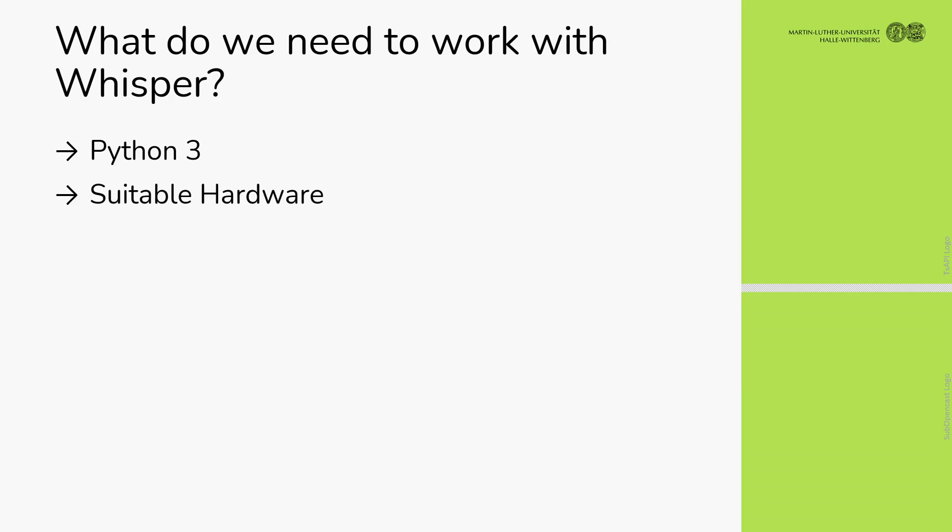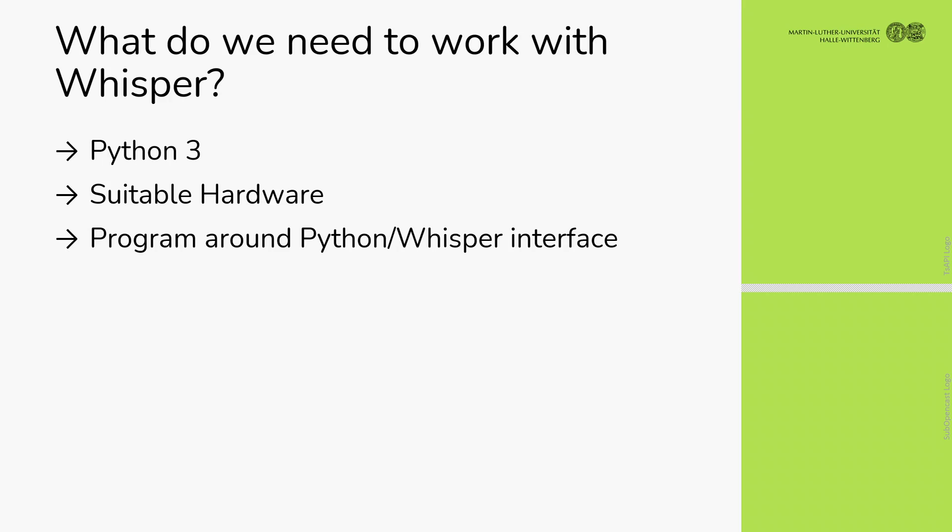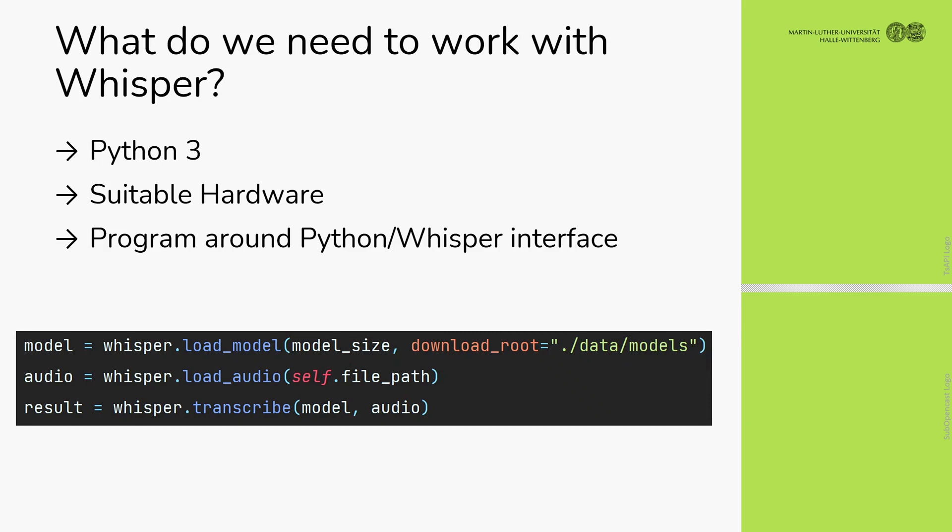We need suitable hardware — GPUs are very fast, but a slow CPU can take a while to generate subtitles. We also need a program around the Python Whisper interface, the Transcription API. To make a simple point, these are the three lines needed to transcribe a video with Whisper in Python — that's all. But we can't just push videos to Whisper without thinking about hardware and performance.